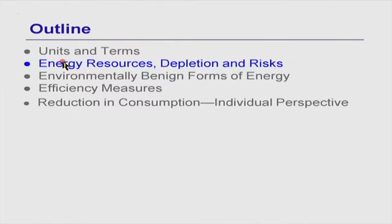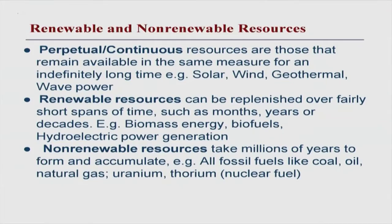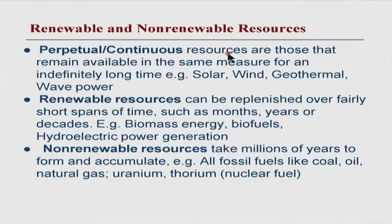The second topic, which is the beginning of this discussion, is the energy resources we currently depend upon — how much of these resources exist, the risks associated with using them, and the fact that being mostly fossil fuels, they are going to get depleted. Renewable resources are those which get exhausted but can be replenished by natural processes. Solar and wind are not renewable in that sense — they are perpetual, always there, they do not get exhausted and then replenished.